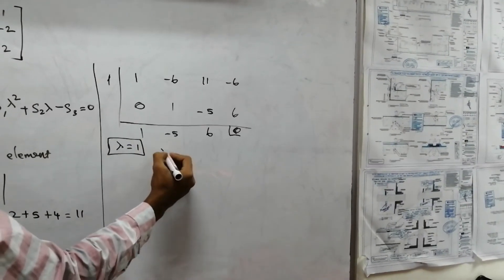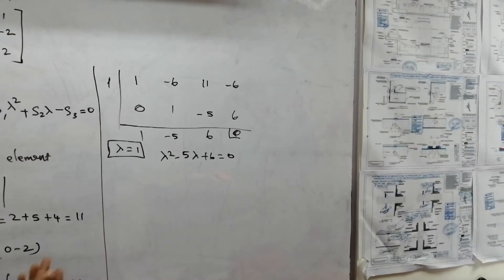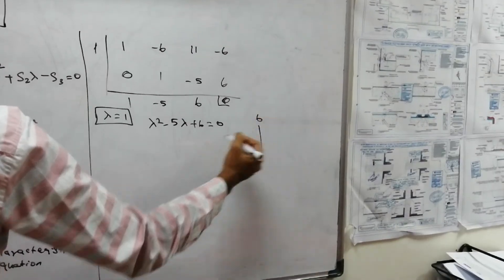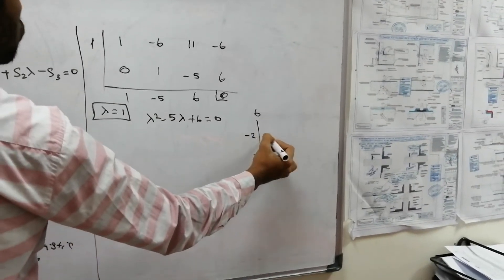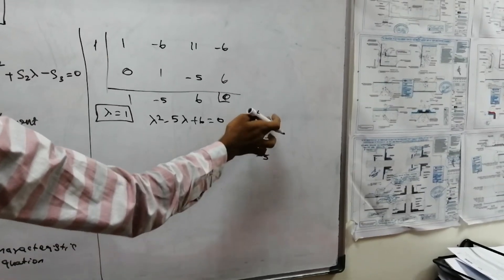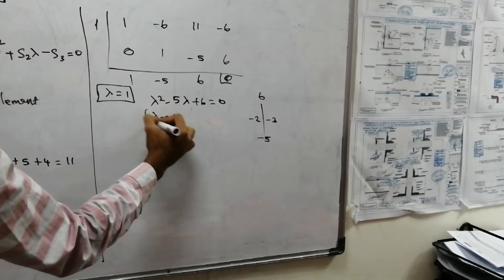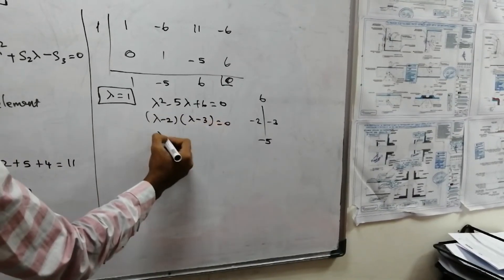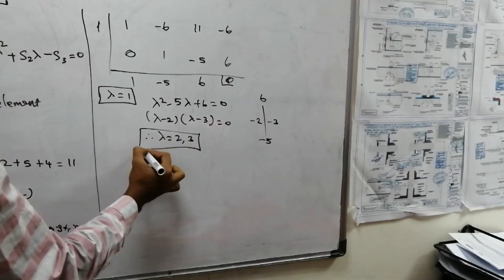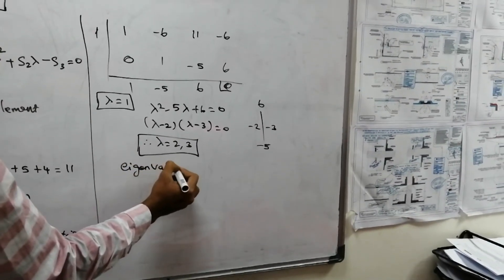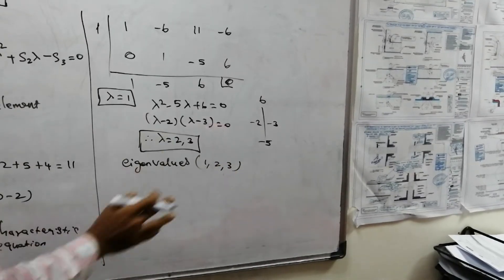The remaining factor is lambda squared minus 5 lambda plus 6 equals 0. Factoring this gives lambda minus 2 and lambda minus 3. So the eigenvalues are lambda equals 1, lambda equals 2, and lambda equals 3. This is the set of eigenvalues.